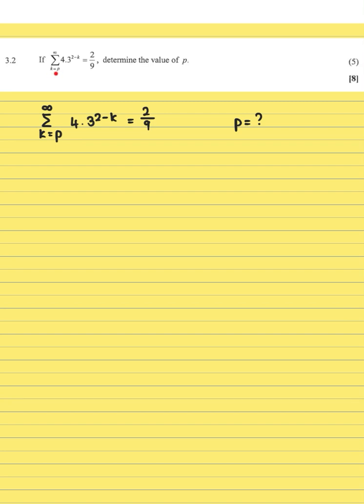Here they're using sigma notation. Remember that sigma notation means the sum of, so we're talking about a series. A series is where you have a number pattern where the terms are added together. They're saying from k equals p to infinity, so they're talking about the sum to infinity. The general formula given is 4 times 3 to the power of 2 minus k.